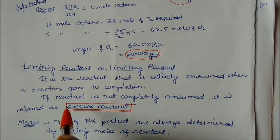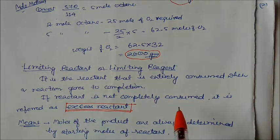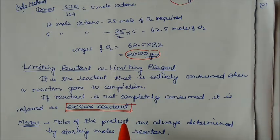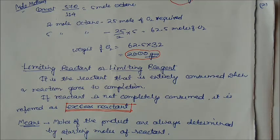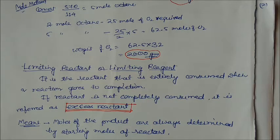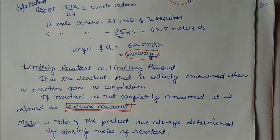If a reactant is not completely consumed, that reactant is called the excess reactant. The amount of product formed is always determined by the limiting reagent — once the limiting reagent is finished, that much product will be formed. Let us understand these concepts through an example.